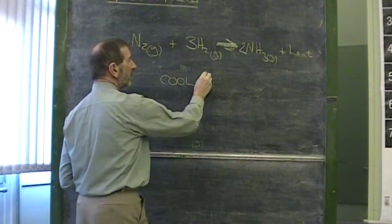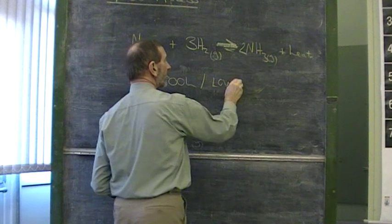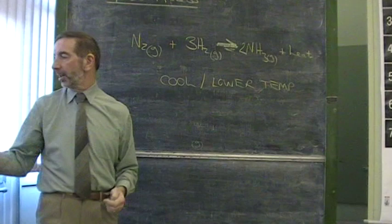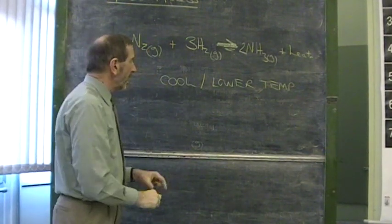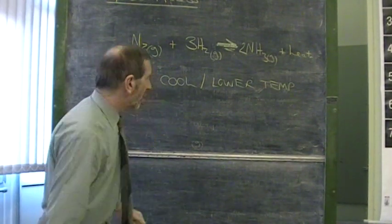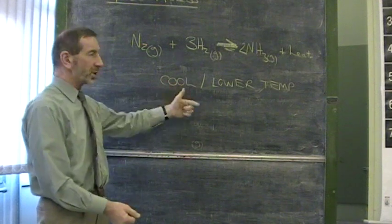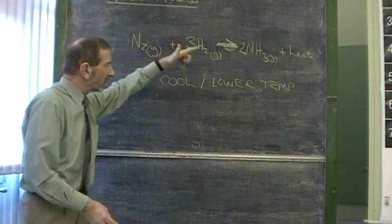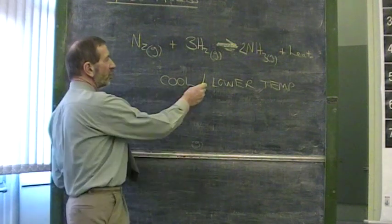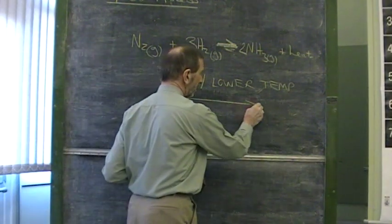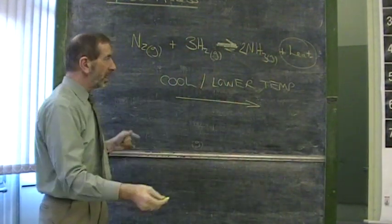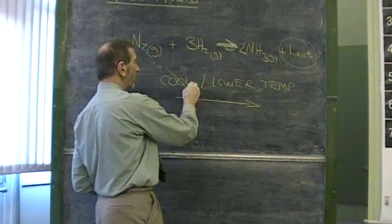Because if we cool it down, if we lower the temperature, the system will try to counteract that. The system will try to not have the temperature lowered. The system wants to maintain the temperature as it was. So if we were to lower the temperature, this reaction will shift to the right to create heat. Because by creating heat, it's going to try to cancel out this cooling effect.